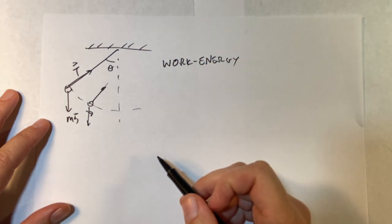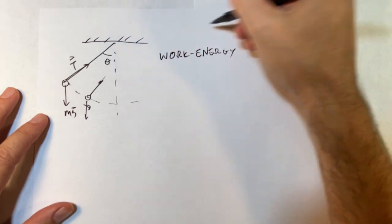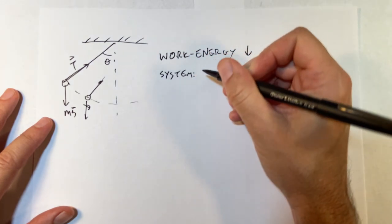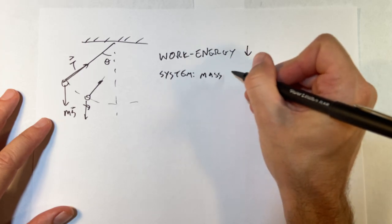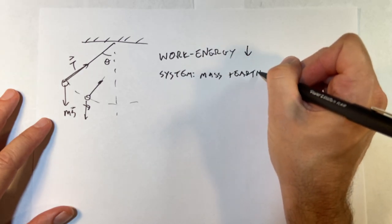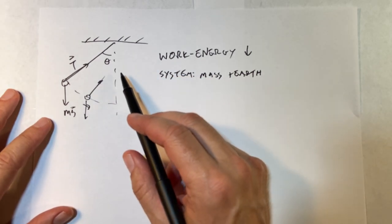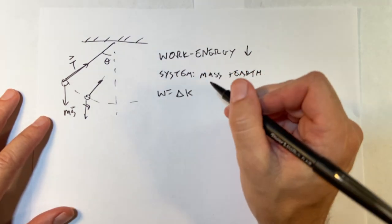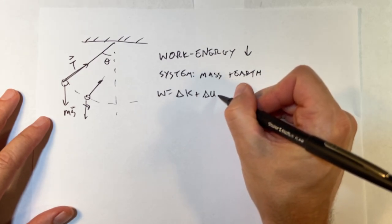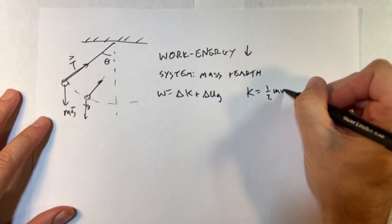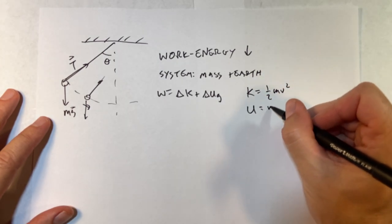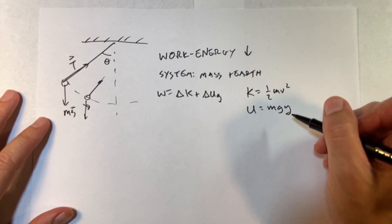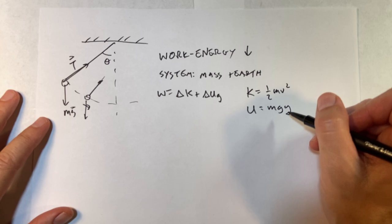And so of course you might want to go back and look at this work energy video. I'll post it down below. So the first thing we need to do is pick our system. In this case, I'm going to choose the system as the mass plus the earth, not the string, but it doesn't matter. And you will see. And then I can say work is the change in kinetic energy of the ball or person or whatever it is, plus the change in gravitational potential. So kinetic energy is one half MV squared and gravitational potential energy is M G Y. And now you see a problem. Where is Y? What's Y? I don't know what Y is. So you can pick Y to be whatever you want. As long as you are consistent with your origin.